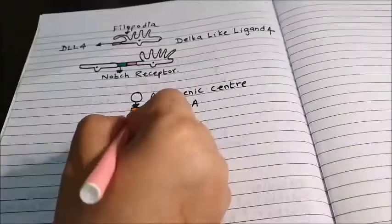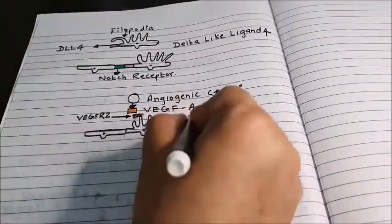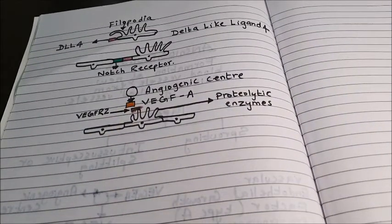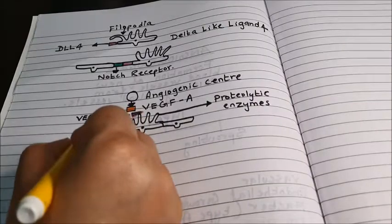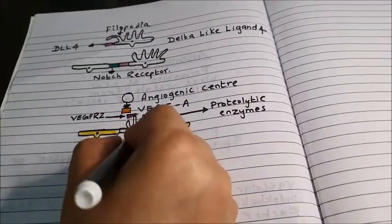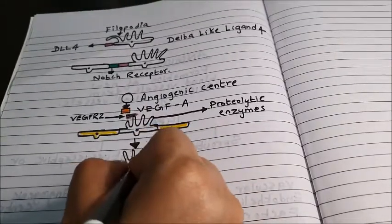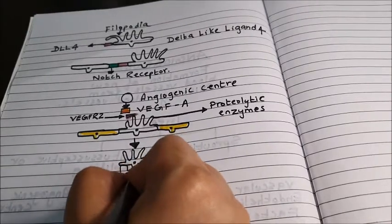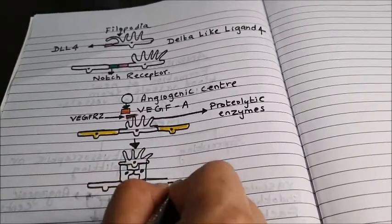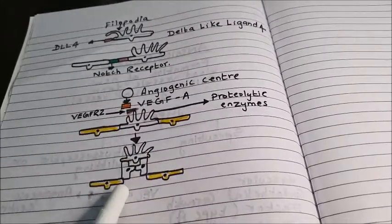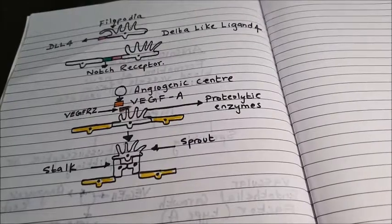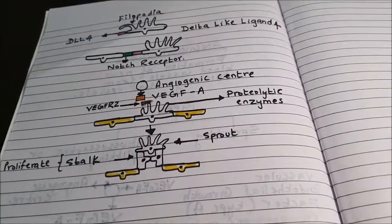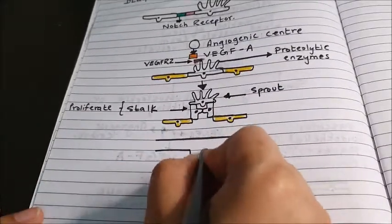Coming back to the angiogenic center: the filopodia release a proteolytic enzyme that dissolves the basement membrane and allows the filopodia to move out towards the angiogenic center. The angiogenic center keeps releasing VEGF-A, which continues to bind to VEGFR2 on the tip cell surface, driving the filopodia to migrate forward. The neighboring endothelial cells, rather than moving, will proliferate — these newly proliferated cells form a stalk and are called stalk cells, helping the tip cell advance toward the angiogenic center. This forms the beginning of the sprout.